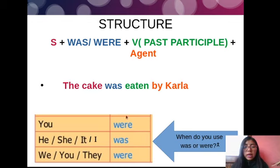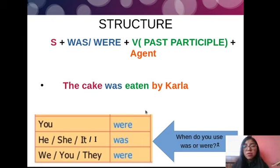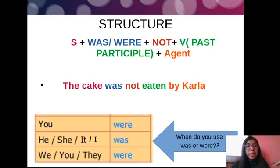You have to keep in mind — usted tiene que tener en cuenta — que el verbo 'to be' siempre lo vamos a conjugar según el sujeto. Use 'were' for: you, we, and they. Use 'was' for: he, she, it, and I. And don't forget to use the verb in past participle form — that is the third column of your verb list.